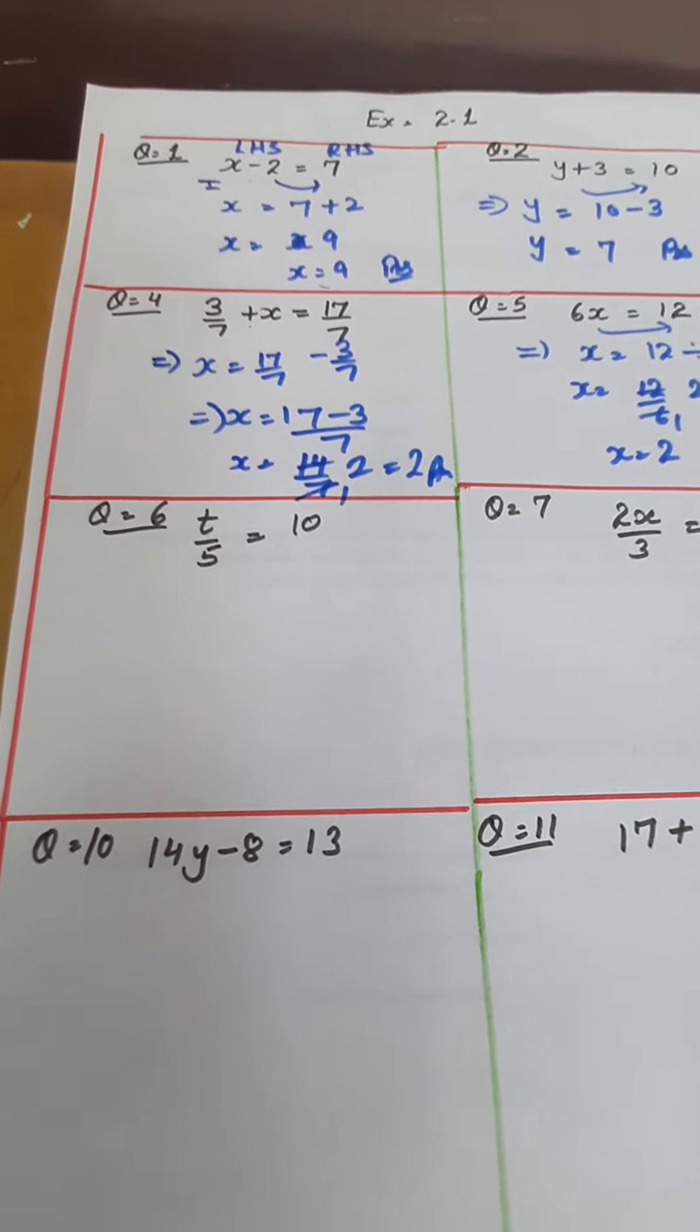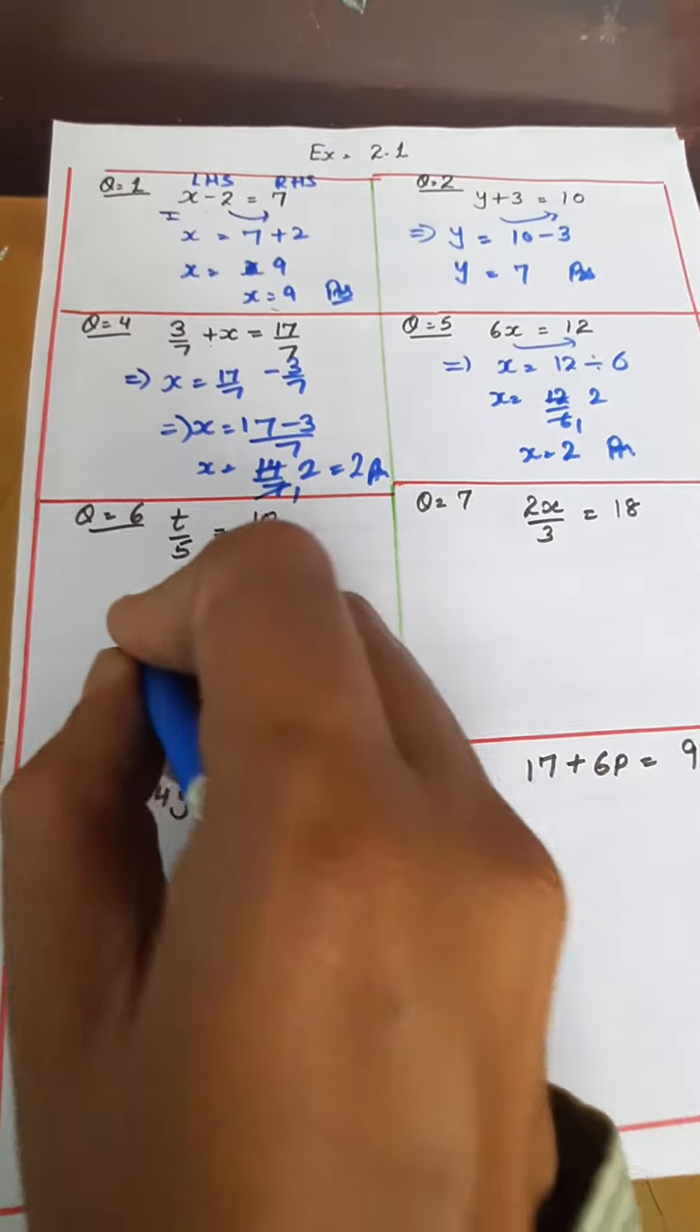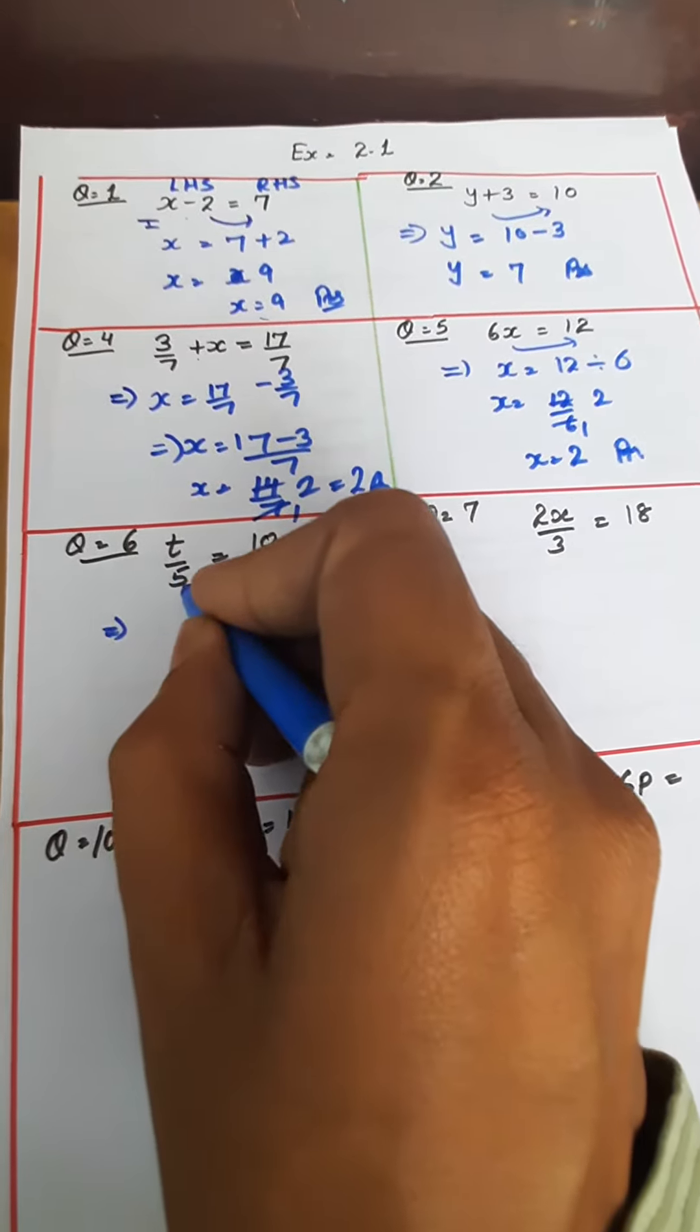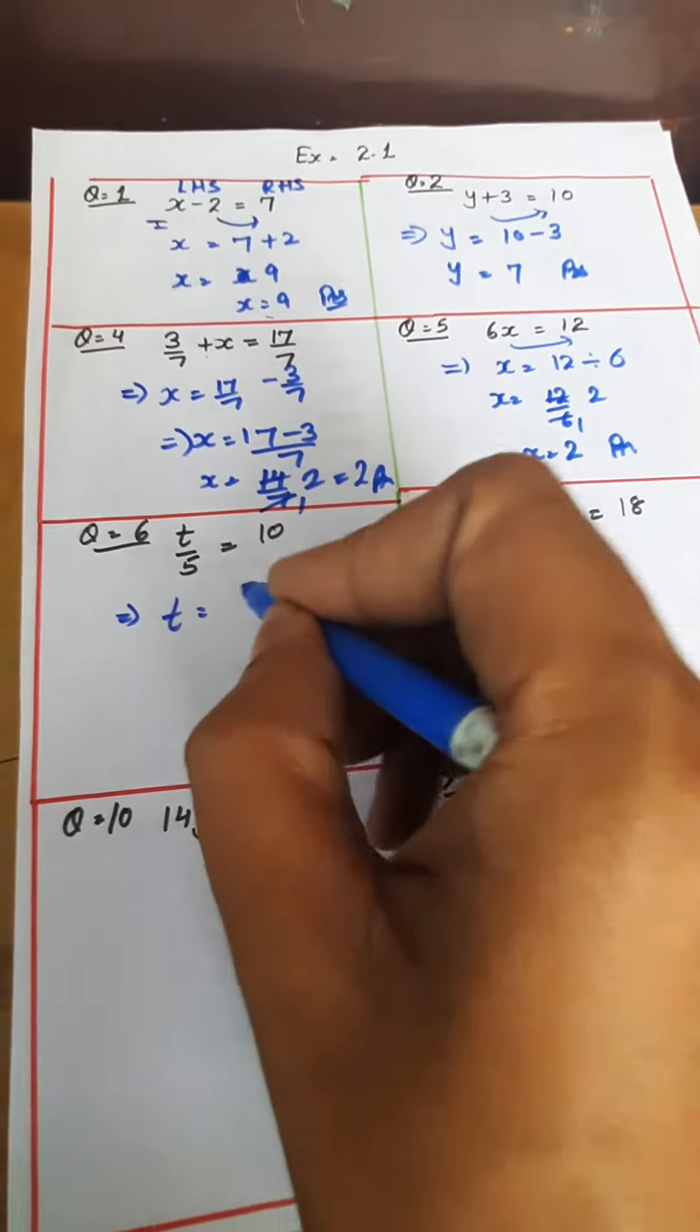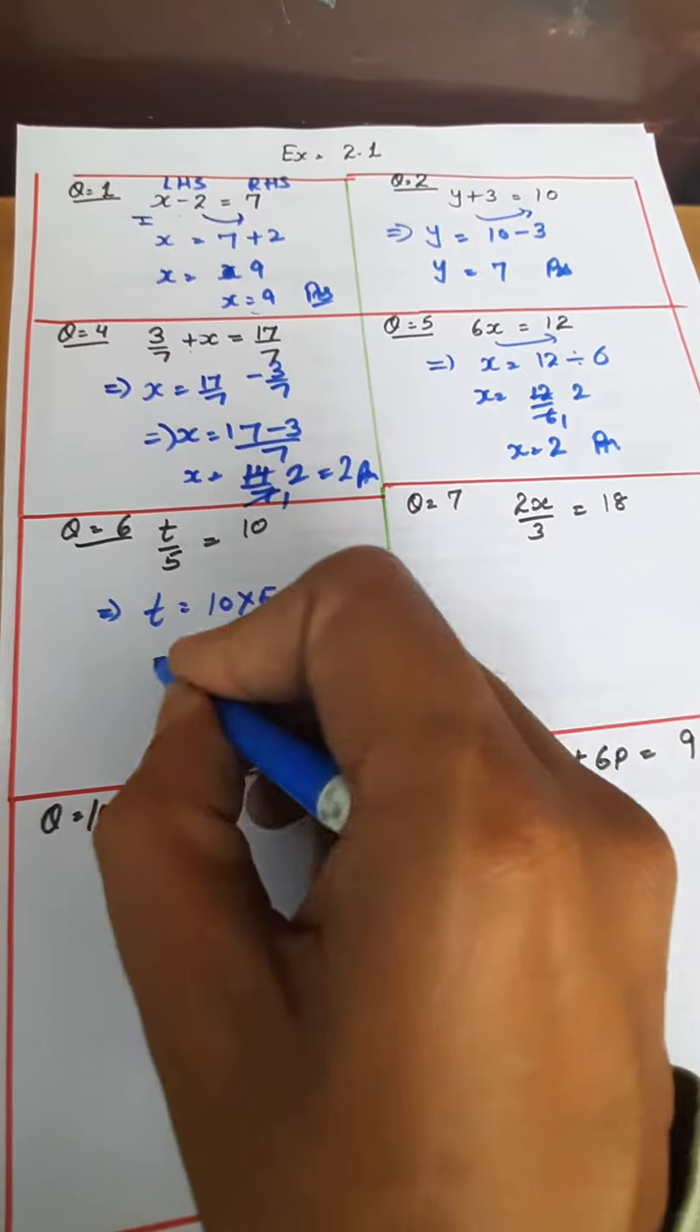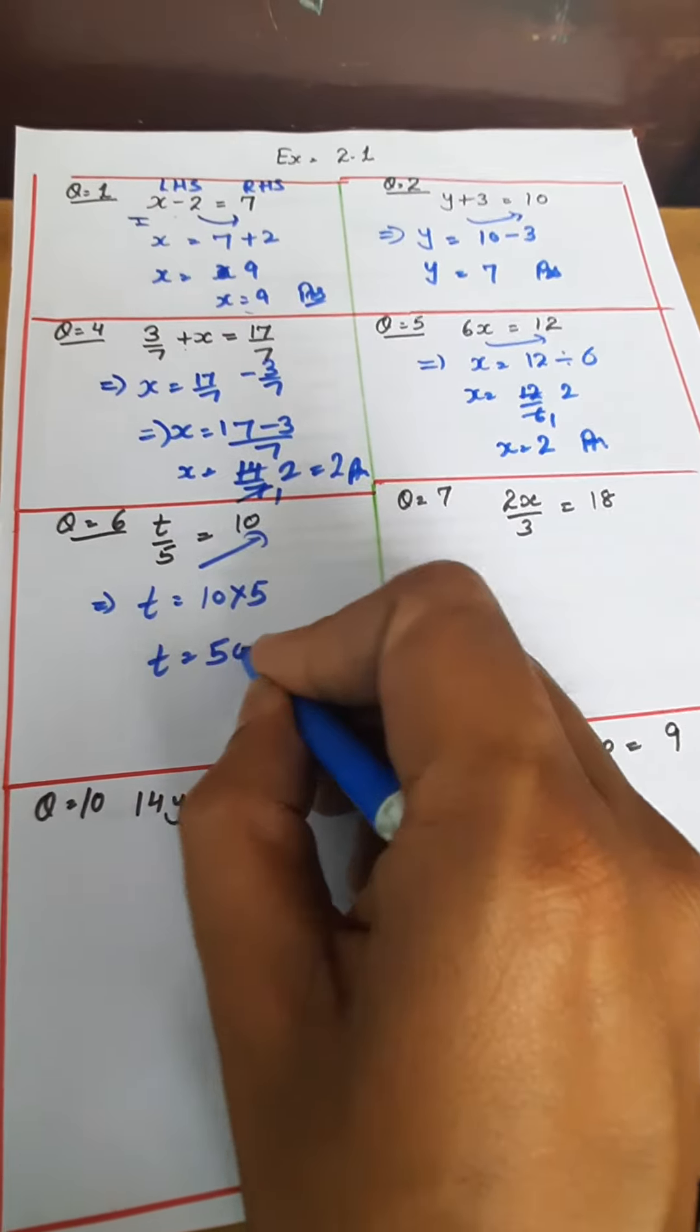Now children, we are solving question number 6. It says t upon 5 equals 10. Now it is in divide, so divide will transpose and 5 will be multiplied. 10 into 5. So t comes out to be 10 into 5 equals 50.